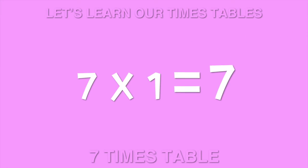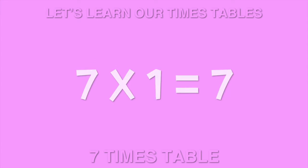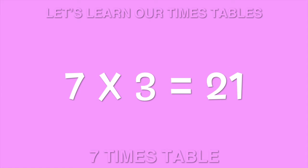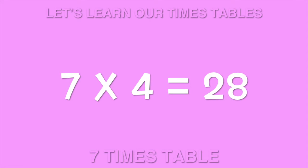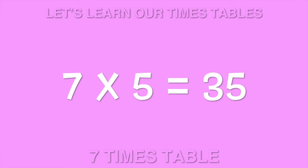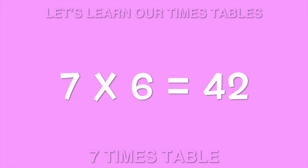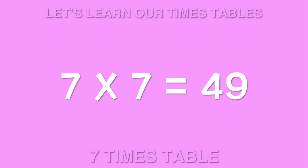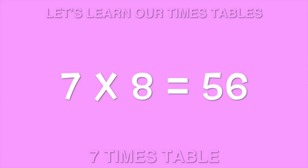7 times 1 is 7. 7 times 2 is 14. 7 times 3 is 21. 7 times 4 is 28. 7 times 5 is 35. 7 times 6 is 42. 7 times 7 is 49. 7 times 8 is 56.